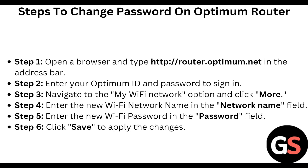Navigate to the 'My Wi-Fi Network' option and click 'More.' Once you click More, enter the new Wi-Fi network name in the network name field, then enter the new Wi-Fi password, and click 'Save' to apply the changes.